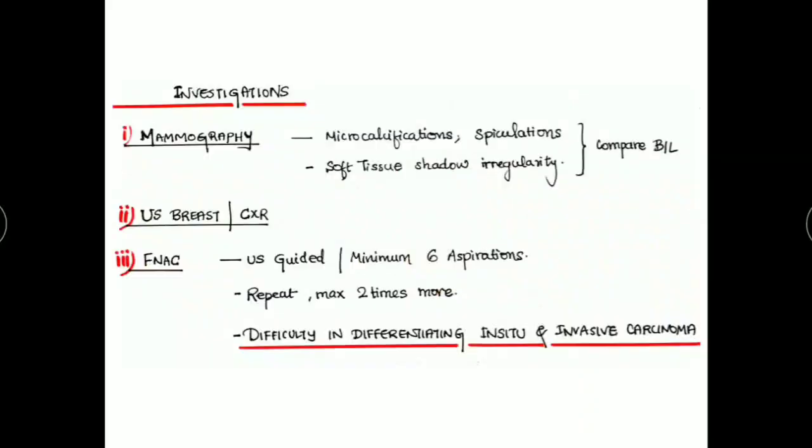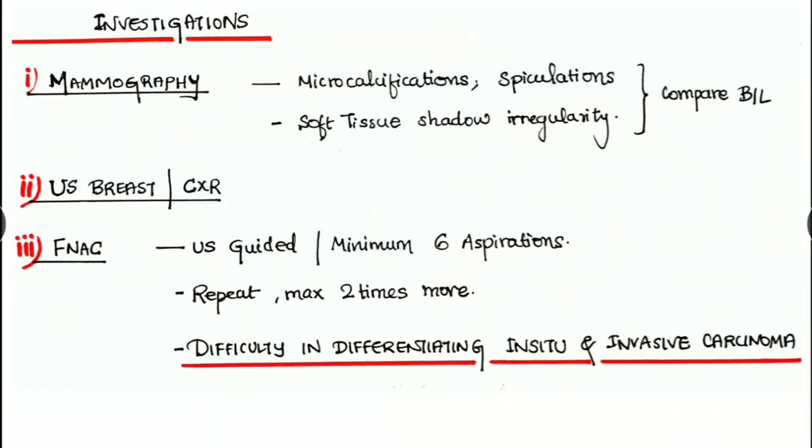Regarding investigations, first and foremost is mammography. We have to expect microcalcifications, speculations, and also we have to observe the soft tissue shadow irregularities. We have to compare this with the other breast also. Next, the ultrasound of the breast and even the chest x-ray. Thirdly, the FNAC - fine needle aspiration cytology. It is an ultrasound-guided procedure. Minimum six aspirations we have to take, repeat maximum two more times.